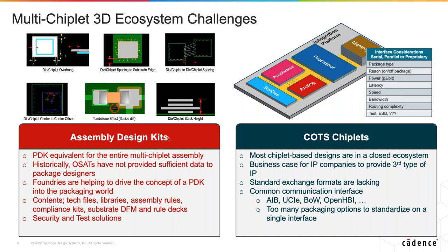There's a big push for ADKs. Cadence is doing a lot of work with OSAT and foundry partners to provide assembly design kits — very helpful for people moving to 3DHI. The key difference between PDK and ADK is the 'A for assembly': making sure that when building chiplet stacks or placing chiplets side by side you're not violating rules of the pick-and-place machine. ADKs alone could be an hour presentation — but that's one of the gaps.